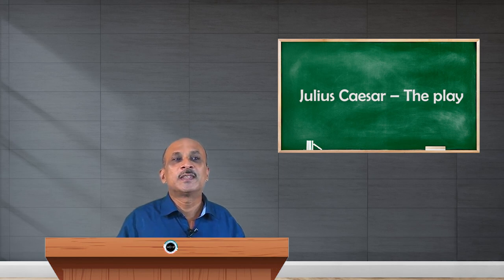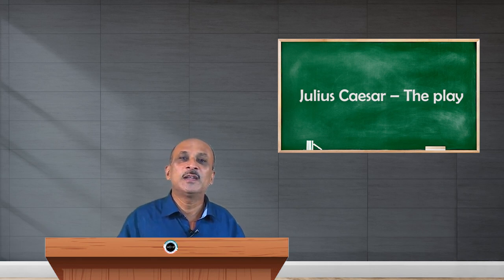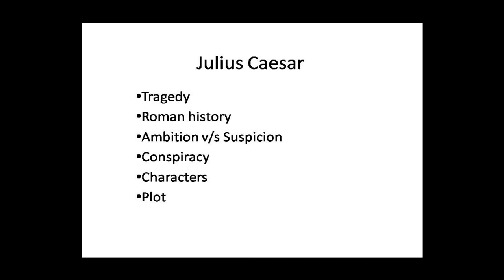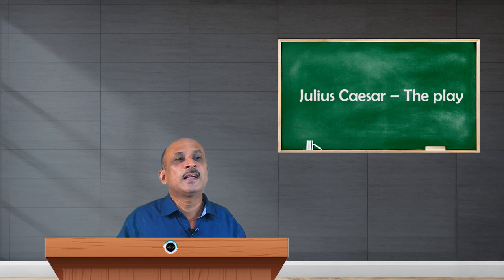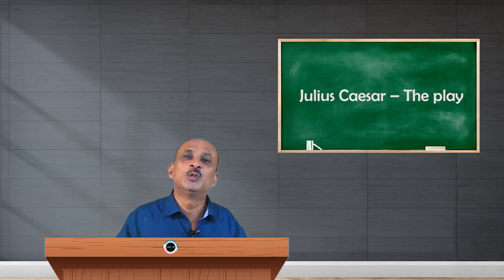The tragedy in Julius Caesar is multiple and multifaceted — personal, social, political, and historical. It is not one person's tragedy; it is many persons' tragedy. Shakespeare weaves the plot in such a way that there is high admiration for Caesar, followed by enmity, suspicion, conspiracy, over-ambition, political power struggle, and a battle for power. Historical places are used realistically and serve as battlefields in Shakespeare's Julius Caesar.